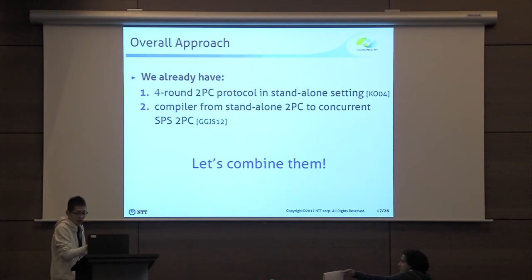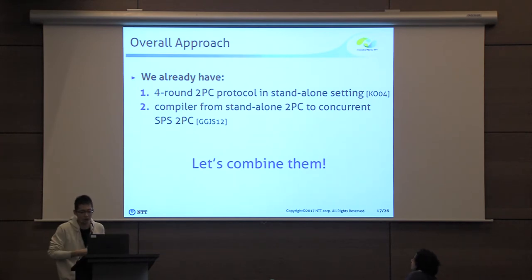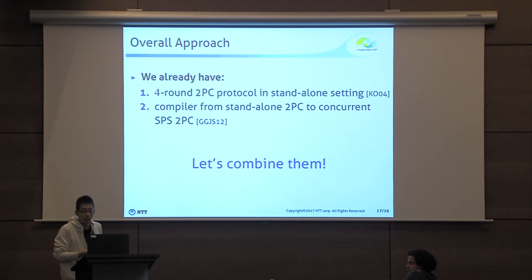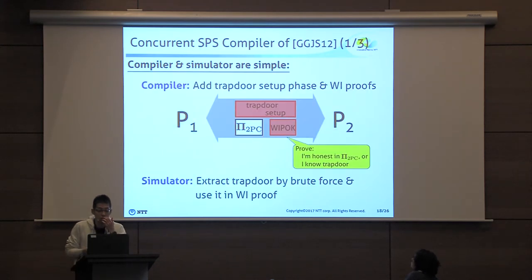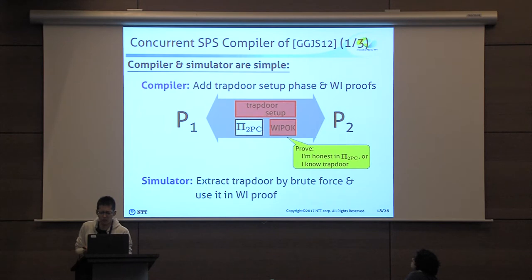However, we encounter many problems when doing this, and I will explain the main difficulty in the next slides. Let me first recall the concurrent SPS compiler of GGJS — Garg, Goyal, Jain, and Sahai.